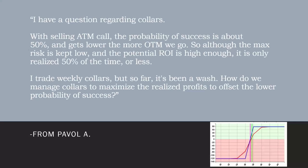So, if I sell a higher strike call, a stock trading at $37.50, I sell the 38, I might have a 45% probability of the stock being above that for the maximum return. I sell a 39, it might move down to 37% probability, and so forth. Pavel says, although the max risk is kept low and the potential ROI is high enough, it is only realized 50% of the time or less. I trade weekly collars, but so far it's been a wash. How do we manage collars to maximize the realized profits to offset the lower probability of success?